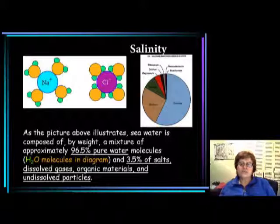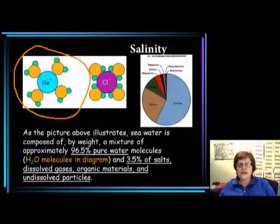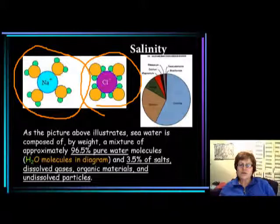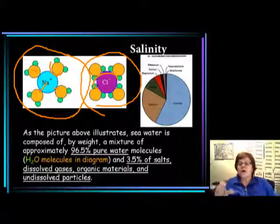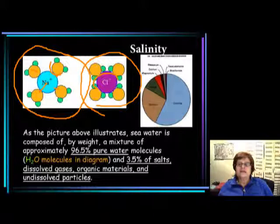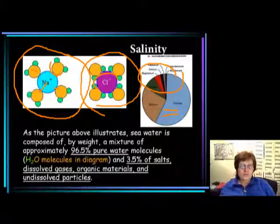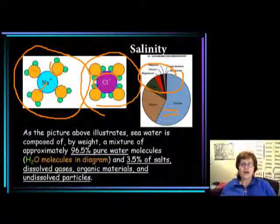In terms of seawater chemistry, when sodium is present the negative (oxygen) side of water molecules is attracted to it, and on the chlorine side, the positive (hydrogen) side of the water molecule is attracted because hydrogen is more positive. Other elements in seawater include magnesium, calcium, potassium, trace elements, and bicarbonate.